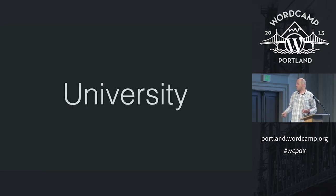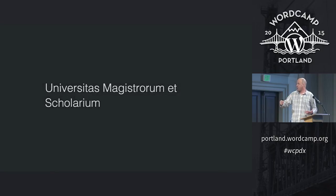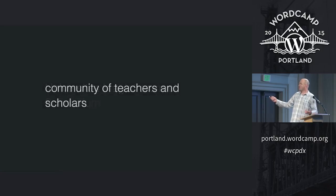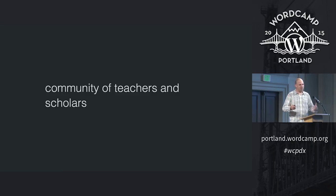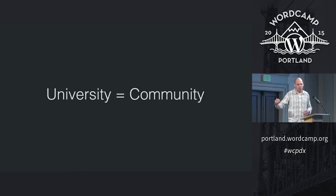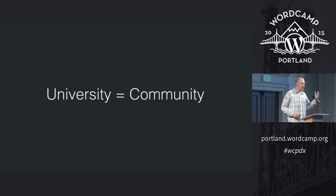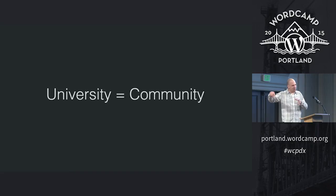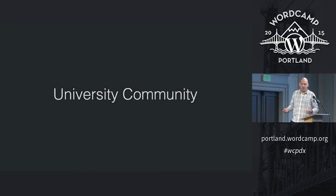Universities are kind of similar. Wikipedia says universities are Magistrorum Scolarium — a community of teachers and scholars. So a university at its core is a community of people doing different things for a unified purpose. And just like WordPress, a university has all different communities inside of it: a really strong alumni community, a strong athletics community, communities based around individual colleges and individual departments — all combined to create a total university community that powers the school forward.